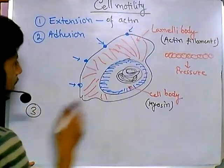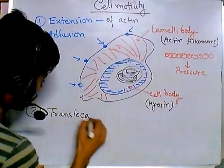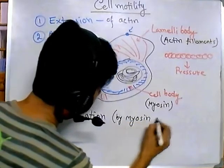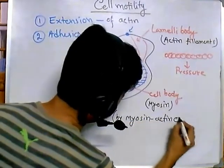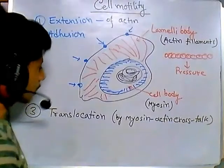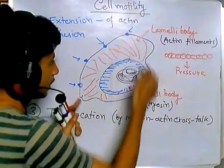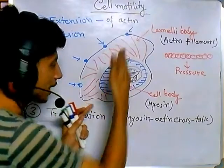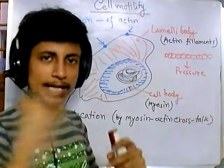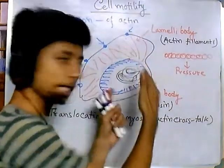Once adhesion is done, the third important stage occurs: myosin translocation. Translocation of the cell happens through myosin-actin crosstalk. Myosin, present in the cell body region, moves along the actin filaments — it slides through the actin. This crosstalk helps the cell migrate forward.